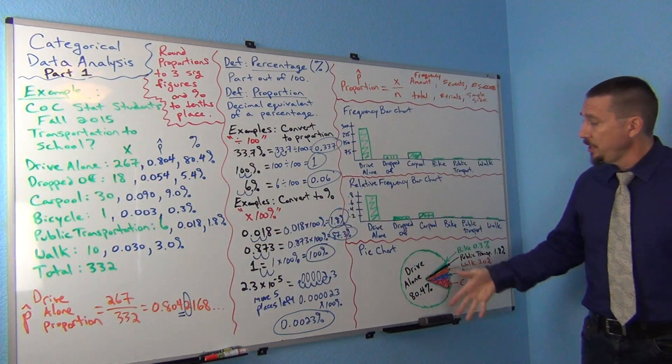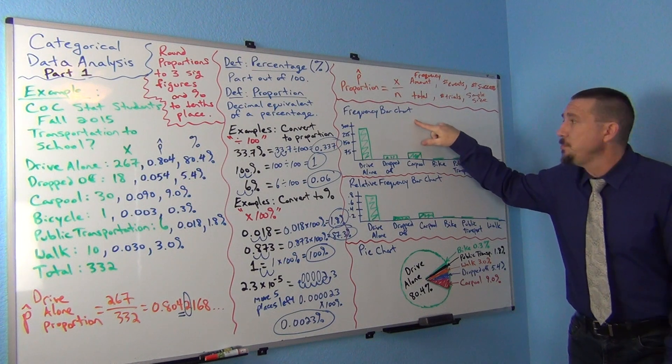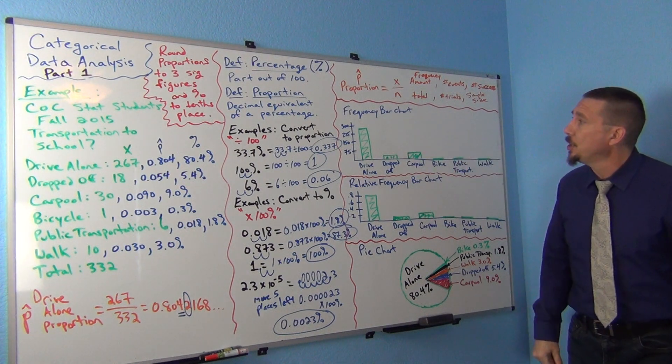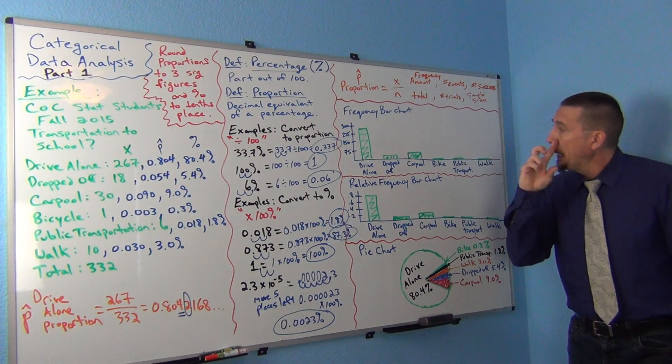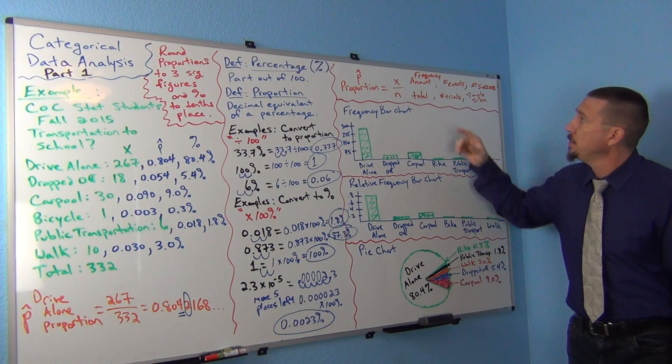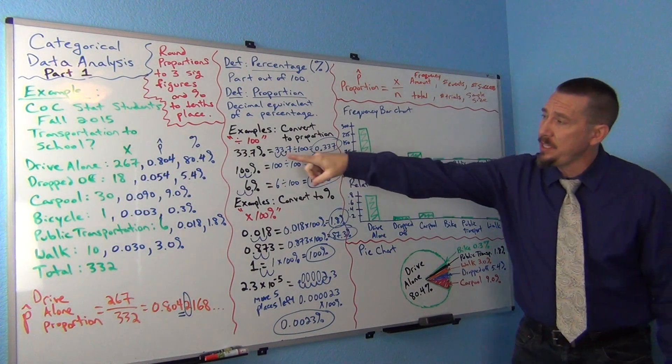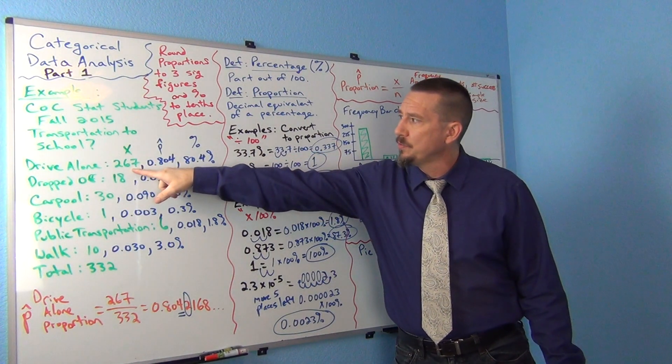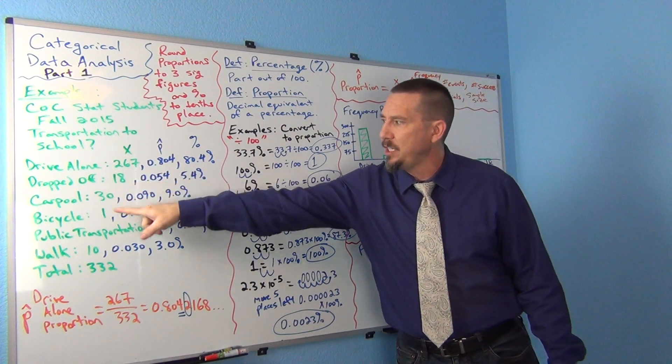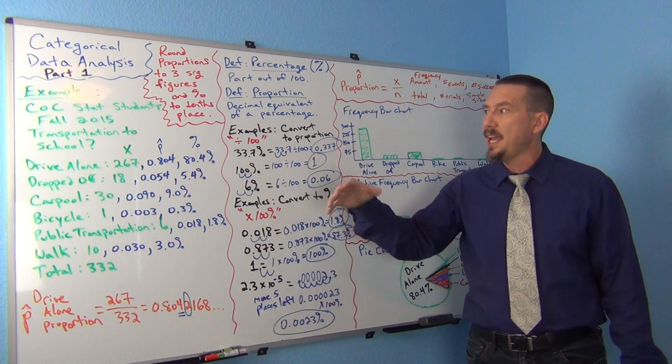One of them is called the frequency bar chart. So a frequency bar chart is just a count. It basically shows you the frequency. Remember the x or the amount is the frequency? That are these numbers, 267. These are frequencies. 18, 30, 1. It just counts how many people or objects in the data have that characteristic.